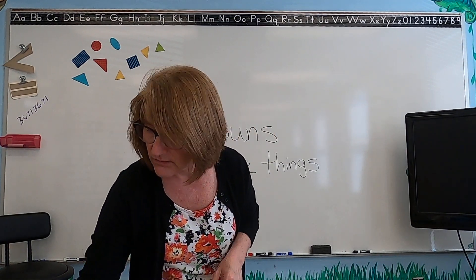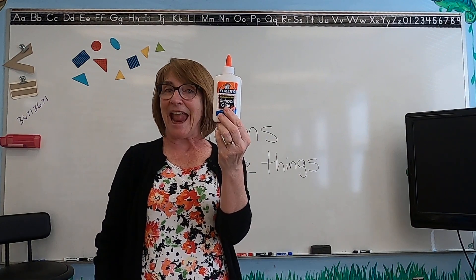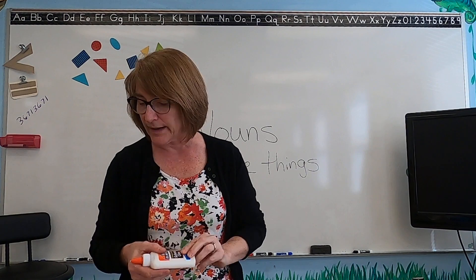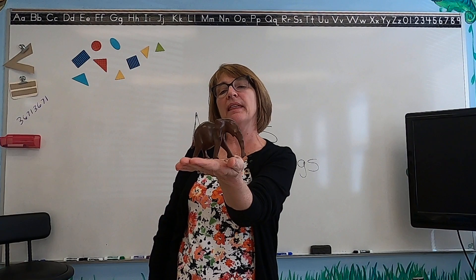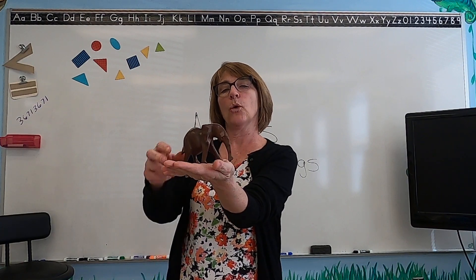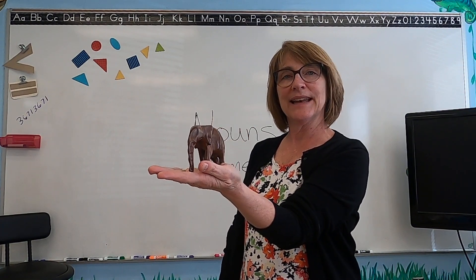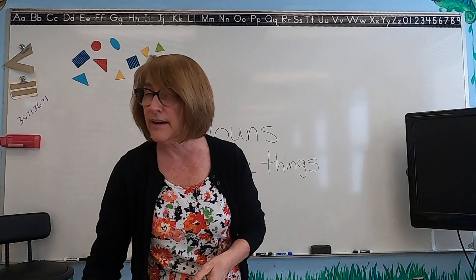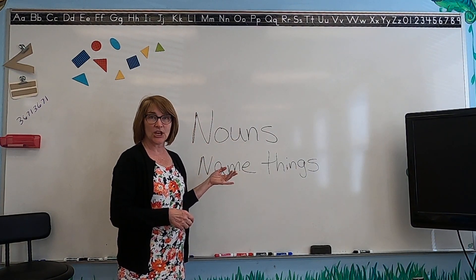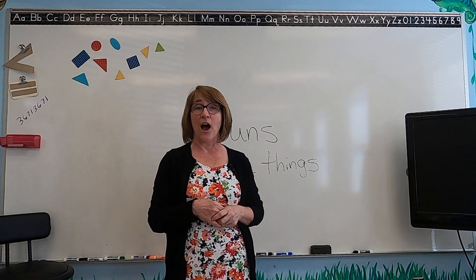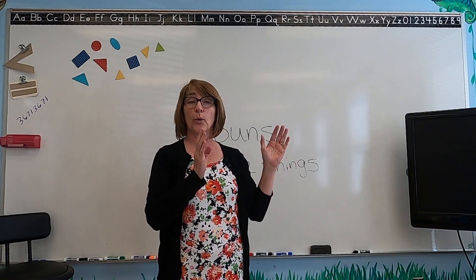What about this? Glue. Glue is the name of this thing, so that names what it is. What about this — can you tell what that is? Somebody brought me that from another country. It's an elephant. So the name of this is an elephant. So the way we can tell what a noun is: a noun is something that names things. The definition of a noun is a noun is a person, a place, or a thing.